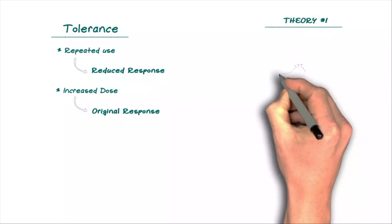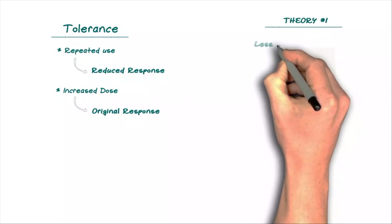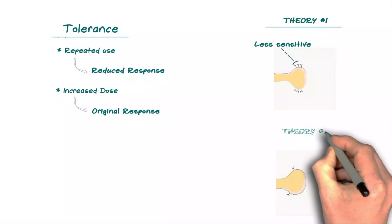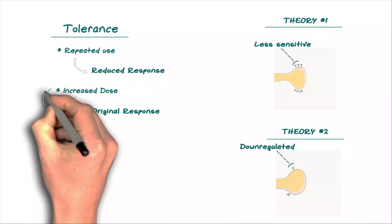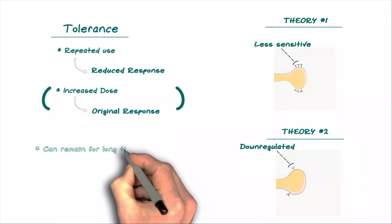One theory is that opioid receptors might become less sensitive to a drug. And the other theory is that neurons may remove opioid receptors from the cell wall in a process called downregulation, leaving less receptors available for binding. In either scenario, tolerance leads to the need for higher and higher doses of a drug. And oftentimes, that tolerance remains for a long time, even after tapering from the drug.